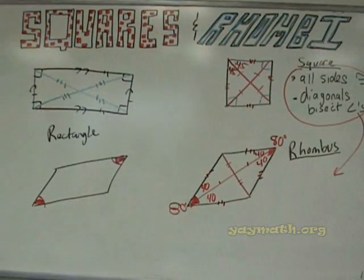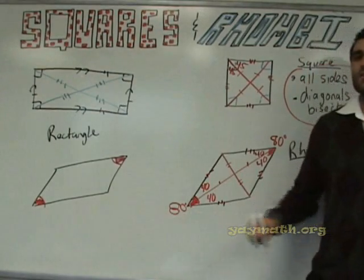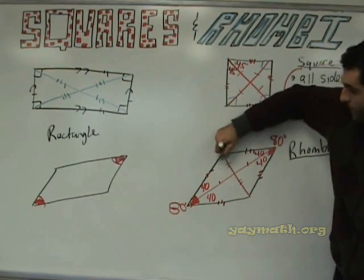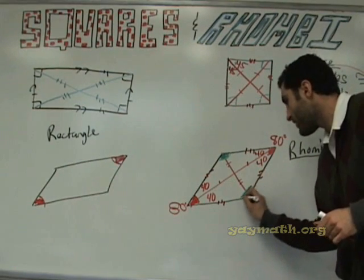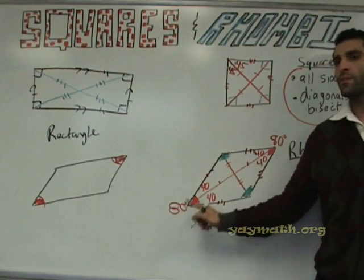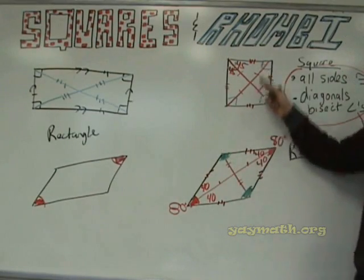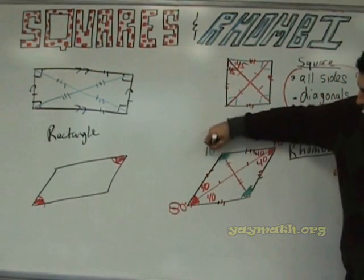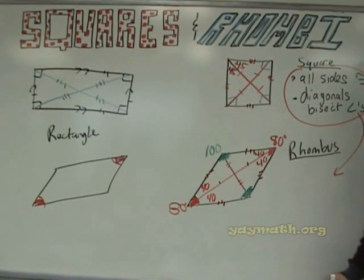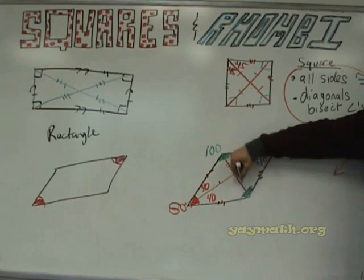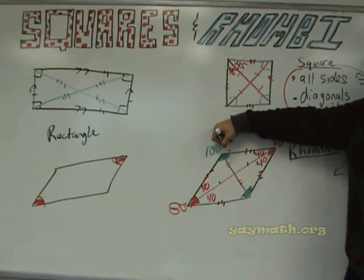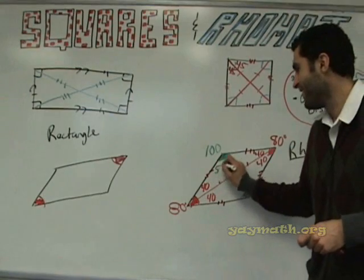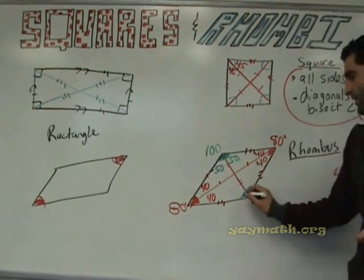Now, same-side: what's same-side to the 80? The one on top and one down here. Same-side angles in a rhombus are supplementary — just like here. So the green angle is going to be 100. And the diagonals bisect the angles, meaning those are 50 and 50. And on the other side, 50 and 50.